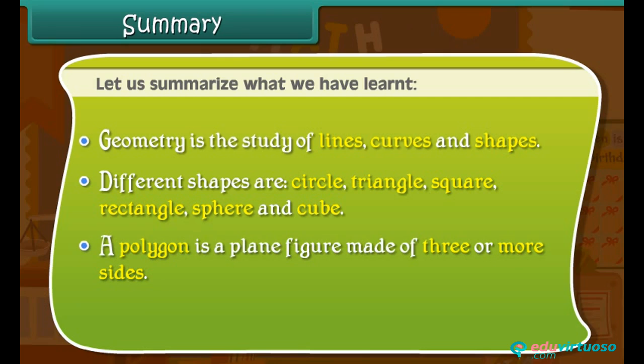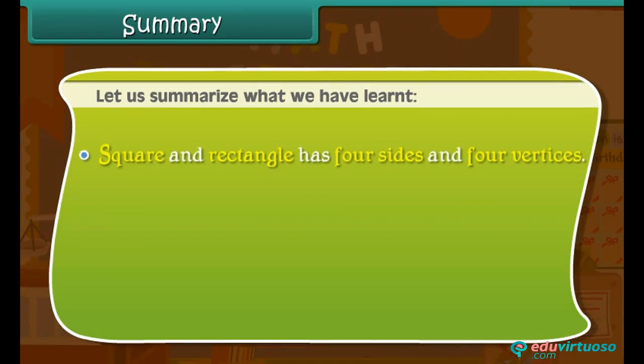A polygon is a plane figure made of three or more sides. A triangle has three sides and three vertices. Square and rectangle have four sides and four vertices.